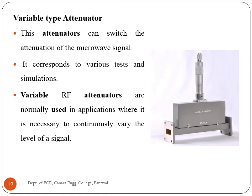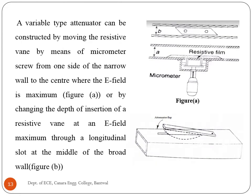Variable type attenuators can switch the attenuation of the microwave signal, corresponding to various tests and simulations. Variable RF attenuators are normally used where it is necessary to continuously vary the level of a signal. A variable type attenuator can be constructed by moving the resistive vane by means of a micrometer screw from one side of the narrow wall to the center where the E field is maximum, as shown in figure A. Or by changing the depth of insertion of a resistive vane at an E field maximum through a longitudinal slot at the middle of the broad wall, as shown in figure B. A maximum of 90 dB attenuation is possible with a VSWR of 1.05. The resistance card can be shaped to give a linear variation of attenuation with depth of insertion.